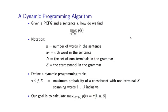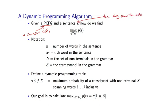Let's now describe the dynamic programming algorithm, which will take a PCFG in Chomsky normal form and also a sentence S, such as 'the dog saw the cat'. Those are the two inputs to the algorithm. It's going to return the highest probability for any tree under the grammar. This is the problem of simply computing the highest probability for any tree under the grammar for this particular sentence.